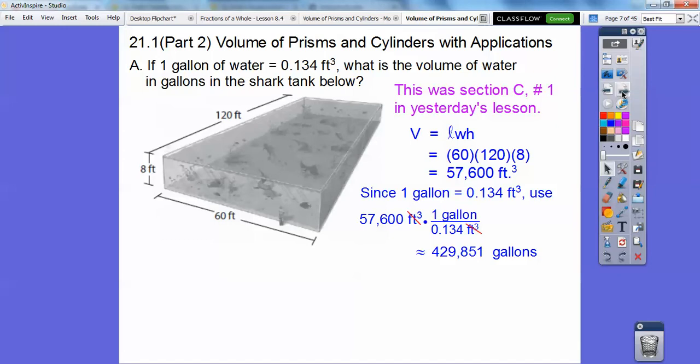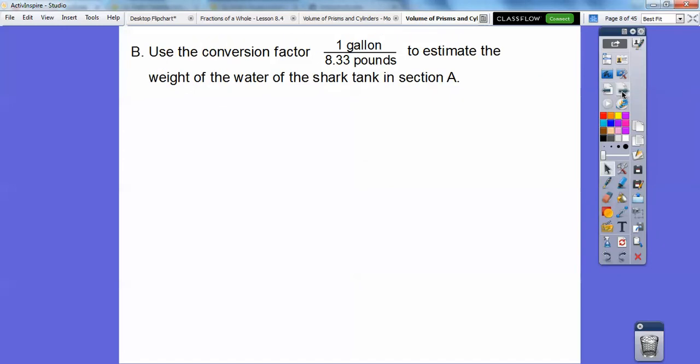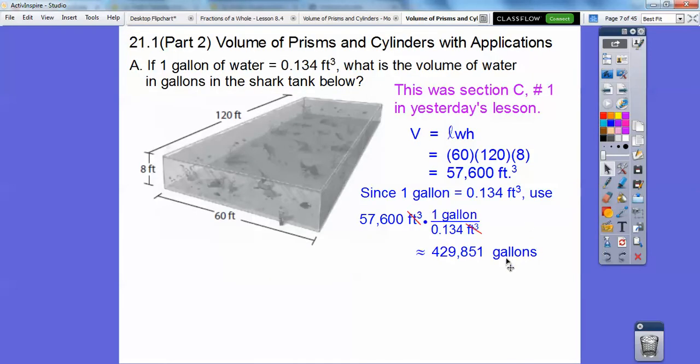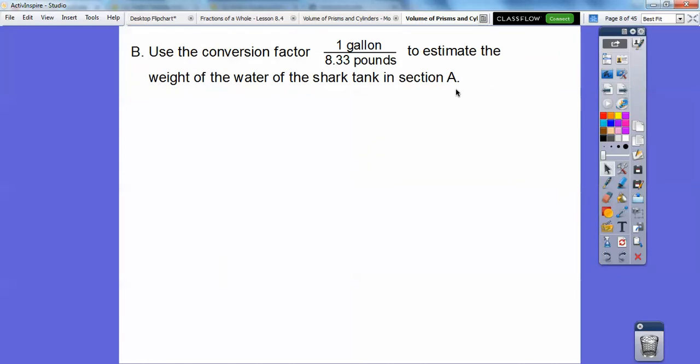So that's the volume in gallons. Now we're going to use the conversion factor. One gallon is about 8.33 pounds to estimate the weight of the water of the shark tank. We want it in terms of pounds. So I'm going to put the 8.33 on top and the gallon on bottom. That way, the gallons will cancel and we'll be in terms of pounds, which is the weight. So all we've got to do now is multiply this number times this number, and we get about 3,580,657 pounds.